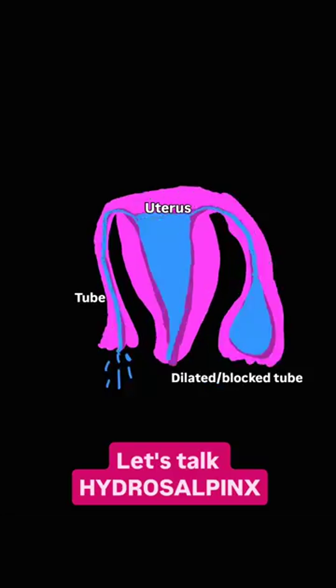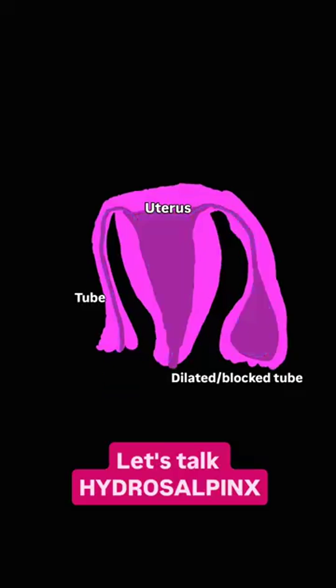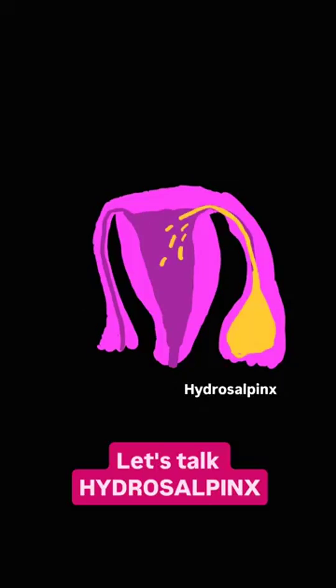If the tube is damaged, sometimes it's blocked at the end, and the fluid will accumulate in one of the tubes. When fluid accumulates like this, the tube can get dilated, and it can look a little bit more like that. This is a problem because a dilated tube does not function the way that it should, and it can also accumulate with fluid, which is a problem for fertility because that seeps back into the uterine cavity, which can impact this blastocyst here from implanting normally.